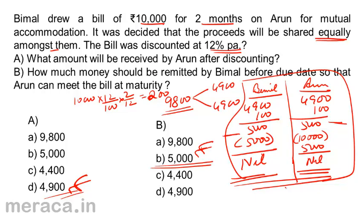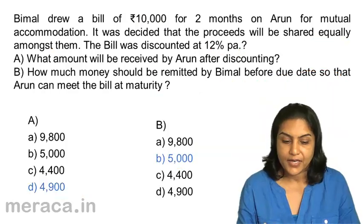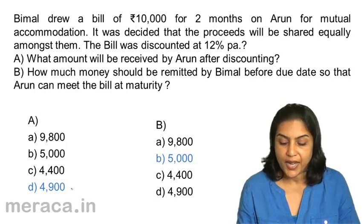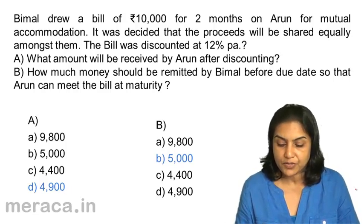It is a different matter that the Rs.100 was a discount charge. Rs.5,000 has to be sent by Bimal to Arun so that Arun can meet the bill of Rs.10,000. The correct answers are: first question D) Rs.4,900, and second question B) Rs.5,000.